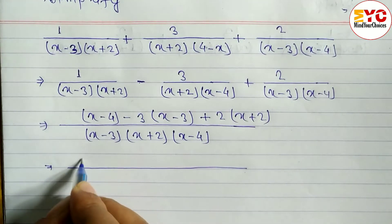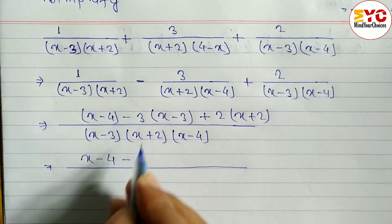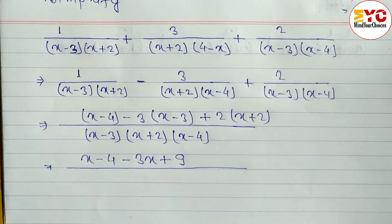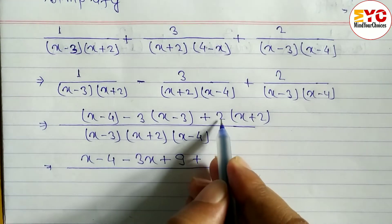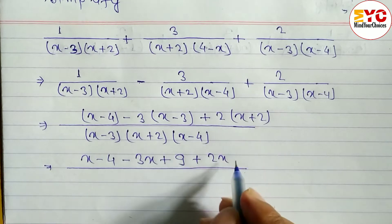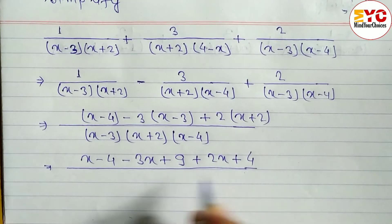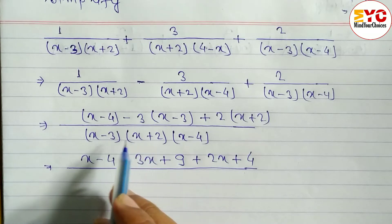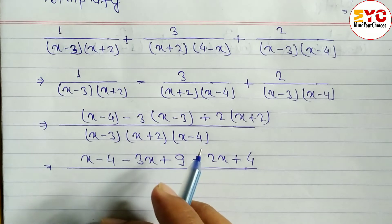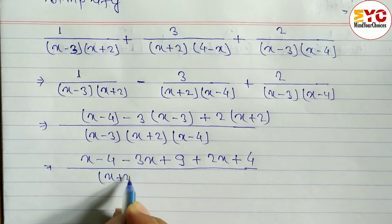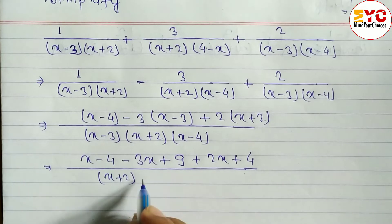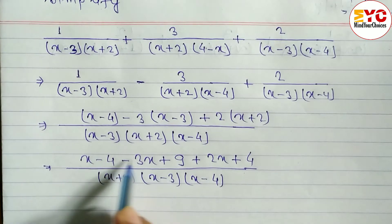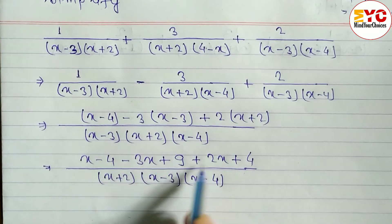Opening the brackets: x minus 4, minus 3x plus 9, plus 2x plus 4, all over LCM. We arrange the denominator as (x plus 2)(x minus 3)(x minus 4). Now we add and subtract the like terms.